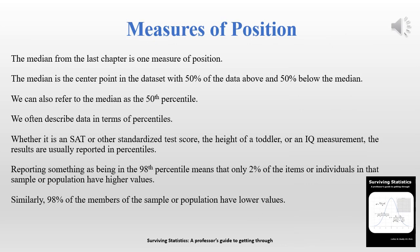When we're dealing with measures of position we're dealing with two different things: both the position location and also the value at that location. In the previous chapter we talked about the median, and the median is the 50th percentile — 50% of the values are above it and 50% of the values are below it. We often deal with the term percentiles when talking about measures of position.